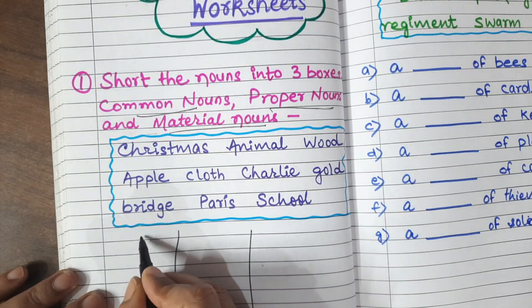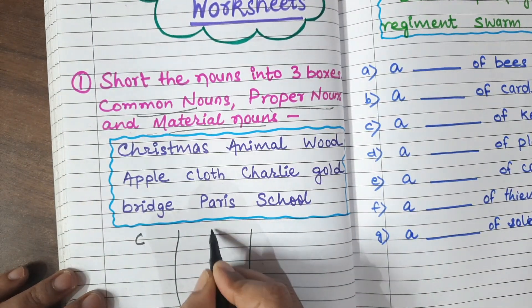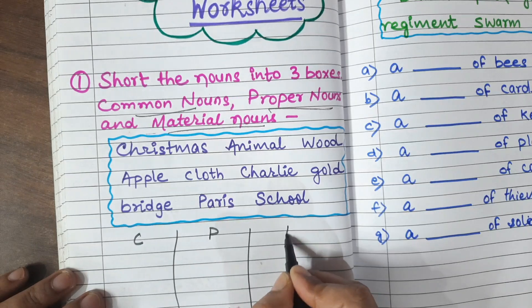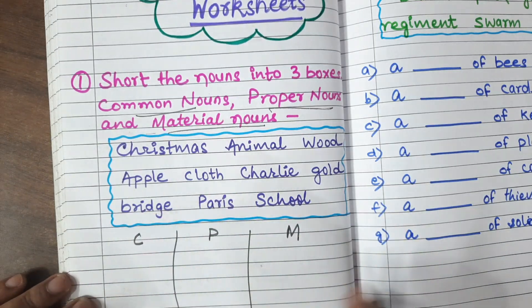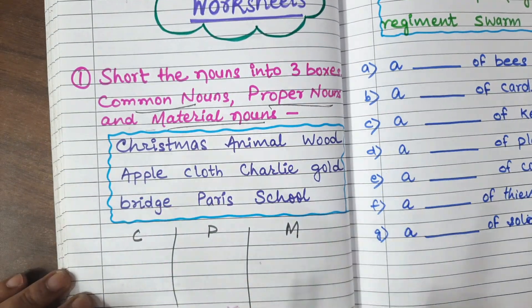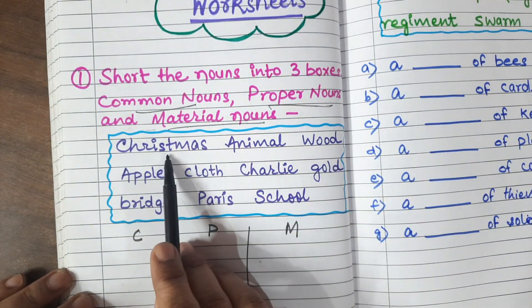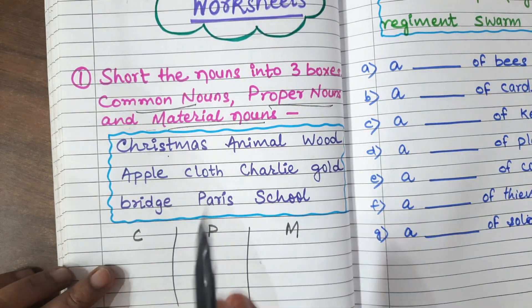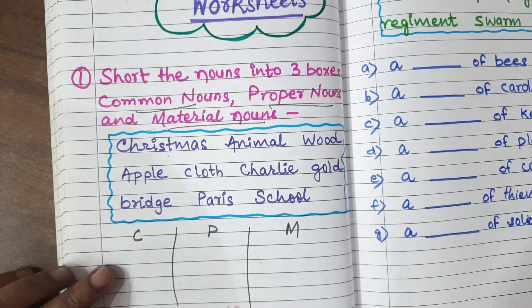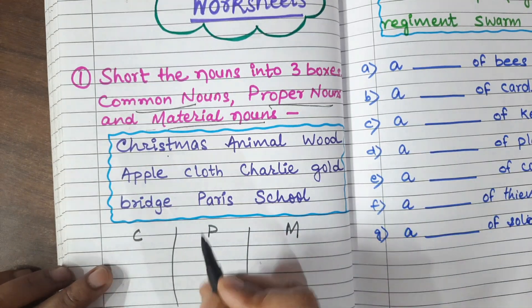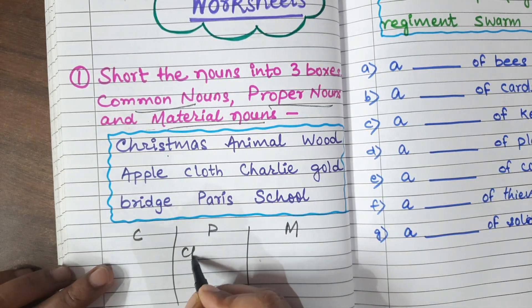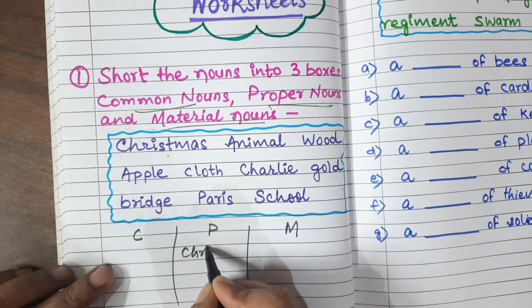Before creating the boxes — common nouns, proper nouns and material nouns — we have to see which column each word will go in. So, Christmas: it is a festival name, so this will come in proper nouns. We write Christmas in the proper nouns column.